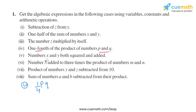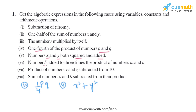Now let's move on to the fifth part: numbers x and y both squared and added. So basically we are squaring x and squaring y and then adding them together, giving us x squared plus y squared.